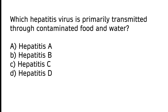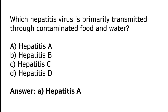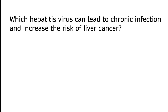Which hepatitis virus is primarily transmitted through contaminated food and water? A) Hepatitis A, B) Hepatitis B, C) Hepatitis C, D) Hepatitis D. The correct answer is option A — hepatitis A virus is primarily transmitted through contaminated food and water.